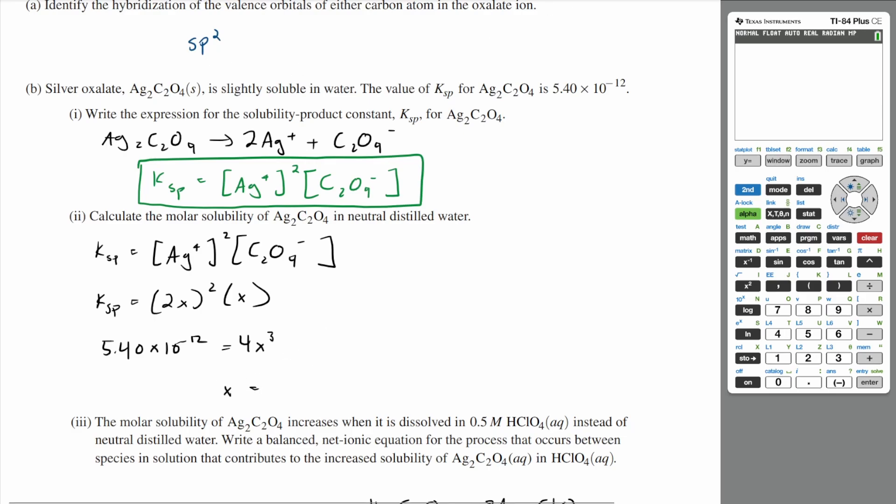let's do 5.40 times 10 to the negative 12th, divide that by 4, and then take that to the 1/3rd power. So your molar solubility is about 1.11 times 10 to the negative 4 molar.